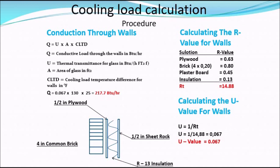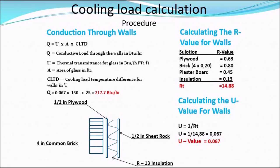To calculate the conduction load through the walls, we first have to find the U-value, and to do that we need the R-value. The R-value is the resistance to the flow of heat — heat always flows from hot to cold, and a higher temperature difference increases heat flow. When resistance is higher, the amount of heat flowing through the materials is lower. The U-value is simply the reciprocal of the R-value and describes how fast heat flows through a material.